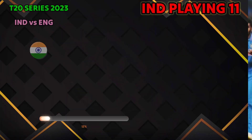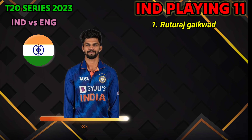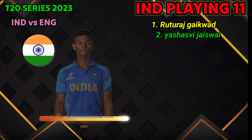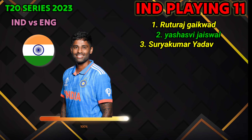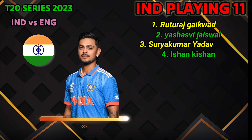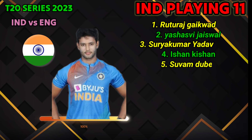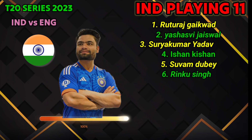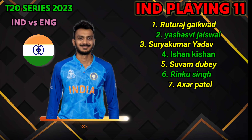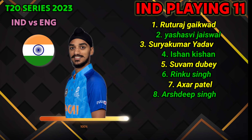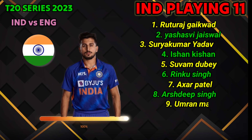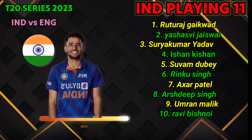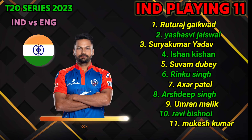Indian team playing 11: 1. Ruturaj Gaikwad, 2. Yashasvi Jaiswal, 3. Shreyas Iyer, 4. Ishan Kishan (left-handed batsman), 5. Shivam Dube (left-handed batsman), 6. Rinku Singh (left-handed batsman), 7. Axar Patel (left-handed batsman), 8. Arshdeep Singh (fast bowler), 9. Umran Malik (fast bowler), 10. Ravi Bishnoi (bowler), 11. Mukesh Kumar (fast bowler).